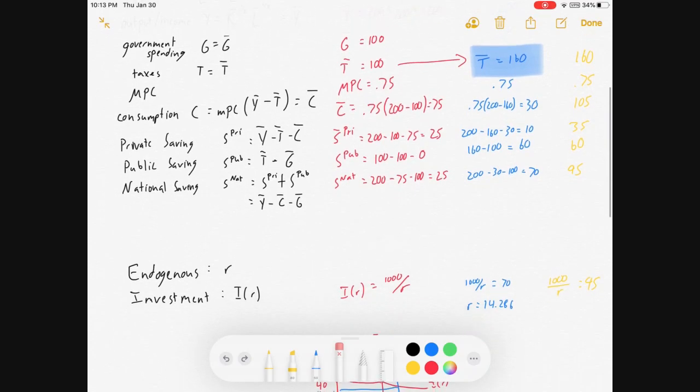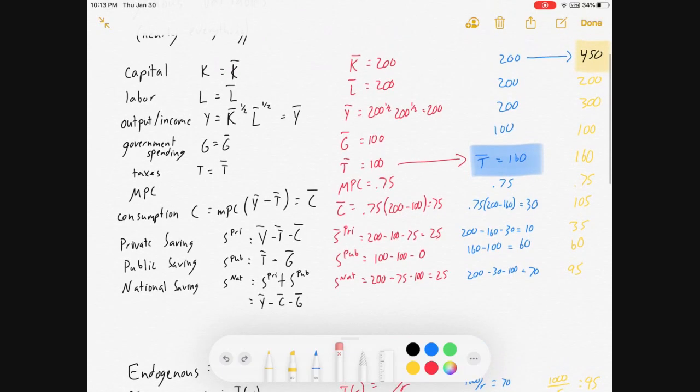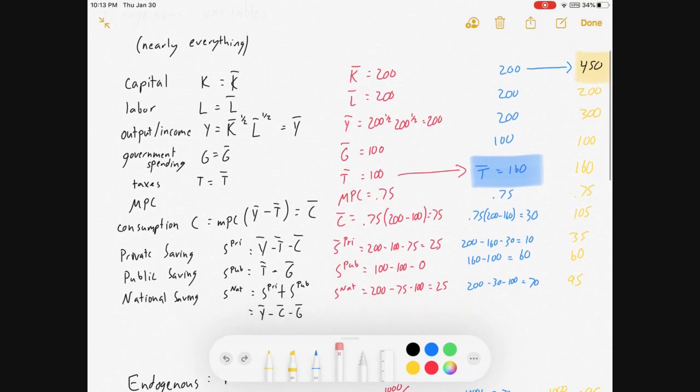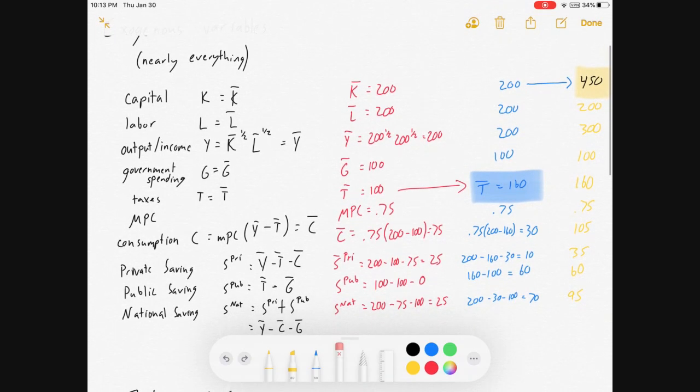And then our interest rate, let's see, 1,000 over R equals 95, R equals 10.5-ish. So I know this is brief. I know I kind of skipped a lot of little algebra steps, but I really just wanted to show you that in these simple, small, closed-economy models where everything is exogenous, solving it is always going to be the same few steps. You're always going to be trying to remember all of these relationships. And if you can, then just going through one at a time, working your way down the list is all you got to do.